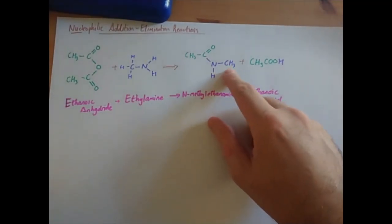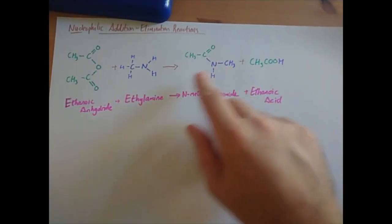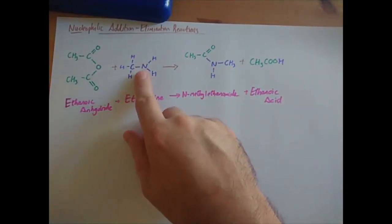So the branch that comes off this nitrogen is entirely based on the branch that's already on the original nitrogen.